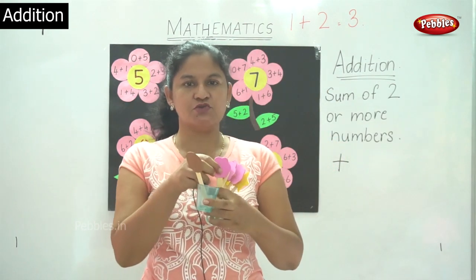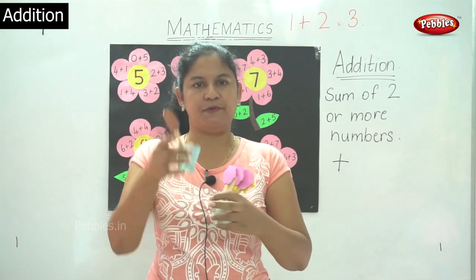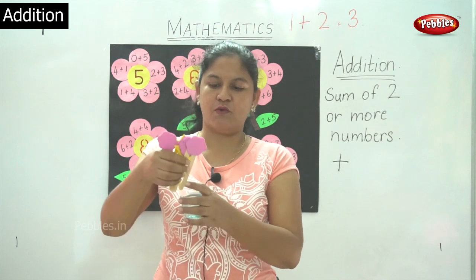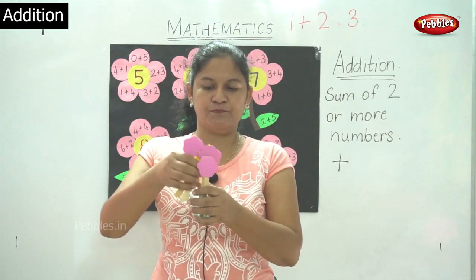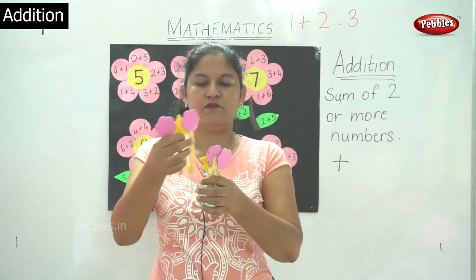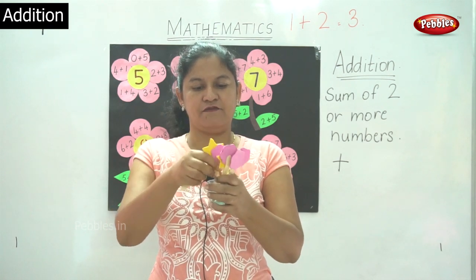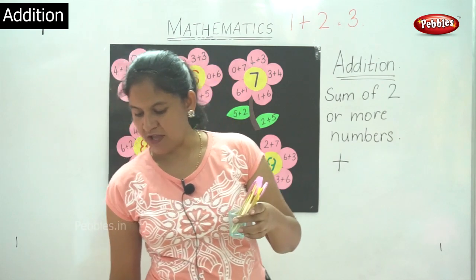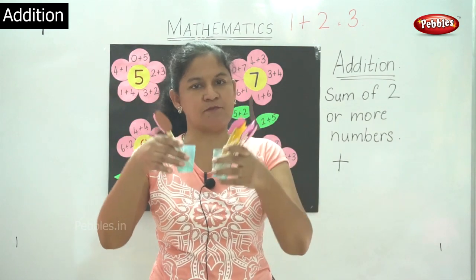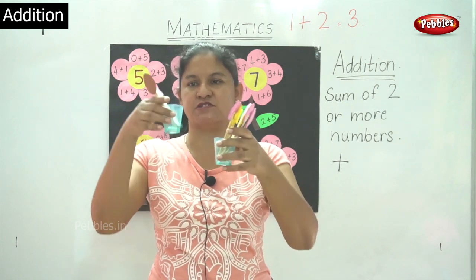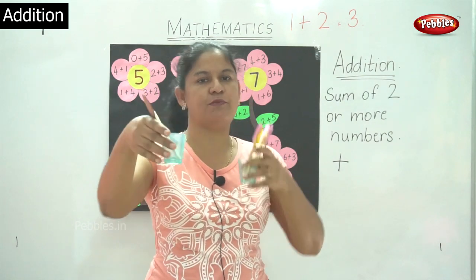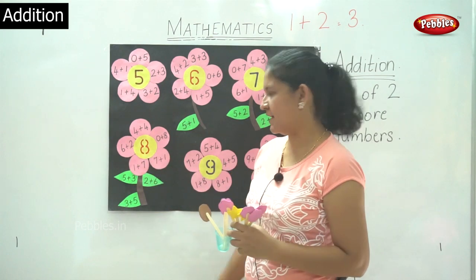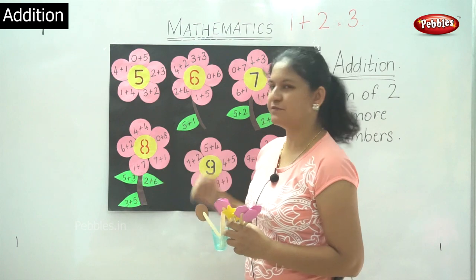Now I am placing 2 ice creams in this cup. I have 2 ice creams in this cup and 1, 2, 3, 4, 5 and 6 — I have 6 ice creams in the other cup. So I want to know the sum of both: 6 plus 2 gives me 8 or 2 plus 6 gives me 8.